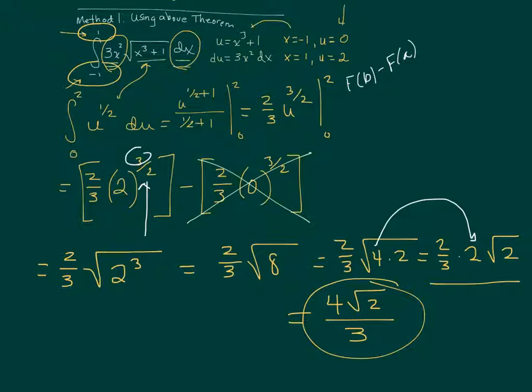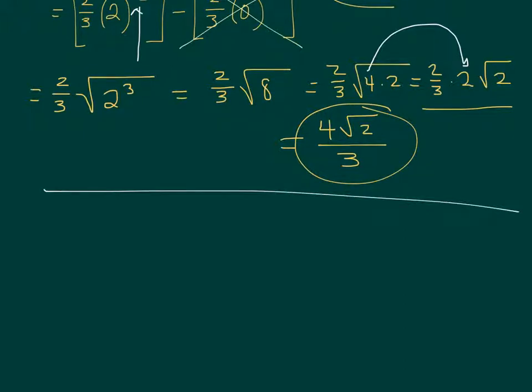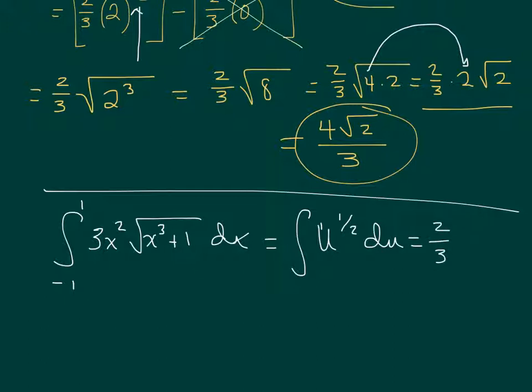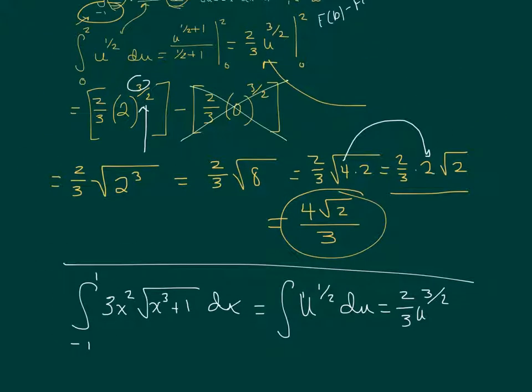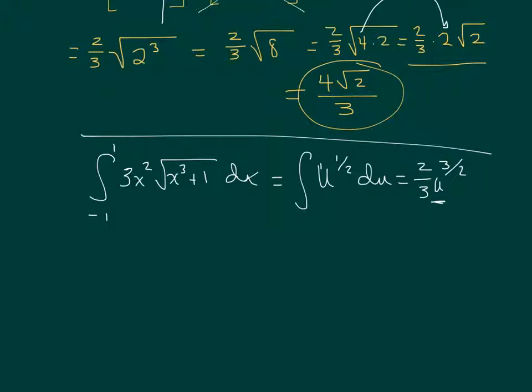Well, you don't have to do that if you, this step here, you just substitute it and put everything back in terms of x. So, you know, it's a lot of time it's dependent on what do you think is easier. And so let's see, let's go back to my original problem, which was negative 1, 1, 3x squared, square root of x cubed, plus 1 dx. I already know from up above, this is u to the 1 half du, which is 2 thirds u to the 3 halves. So, so far, nothing's different. This is exactly what we did to that step.